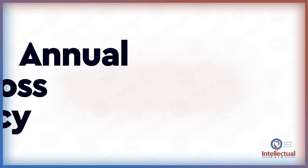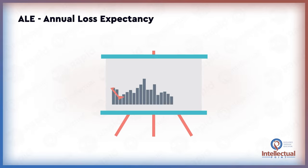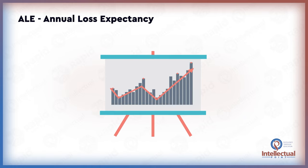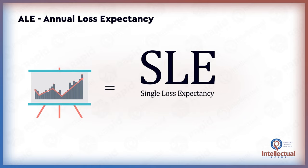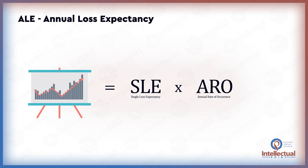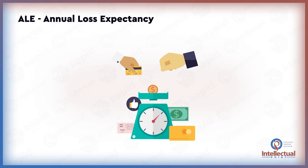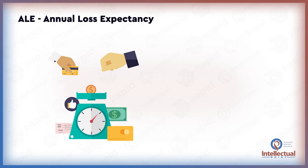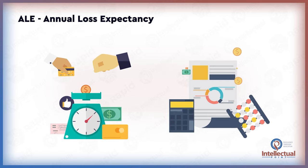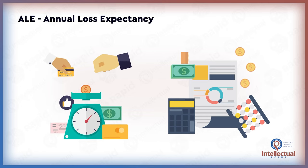ALE, or Annual Loss Expectancy, is the total cost of a risk to an organization on an annual basis. This is determined by multiplying the SLE, or Single Loss Expectancy, by the Annual Rate of Occurrence. Calculating ALE as part of a quantitative risk assessment is essential for making informed business decisions and more effectively performing cost-benefit analysis to determine if employing specific countermeasures are worth the investment.